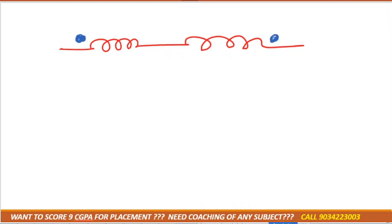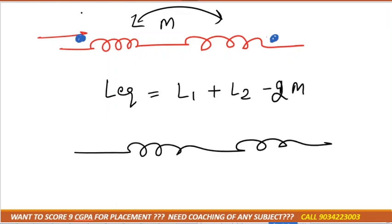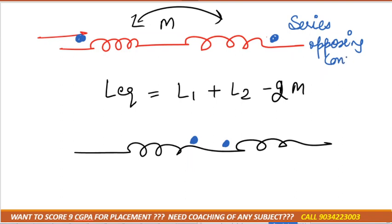Now consider another case where one current is entering and one current is leaving — here it is entering and here it is leaving. In that case, the formula for L equivalent is L1 plus L2 minus 2M. Similarly, if one current is leaving and one is entering, the same formula applies. This is technically known as the series opposing connection.